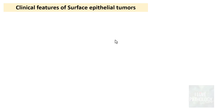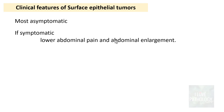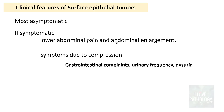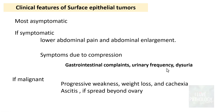Turning to the clinical features of surface epithelial tumors in general: most patients with benign tumors are asymptomatic. When symptomatic, they may present with lower abdominal pain or abdominal enlargement depending on tumor size, or with compression symptoms from large tumors such as gastrointestinal complaints, urinary frequency, and dysuria. Malignant surface epithelial tumors present with features of malignancy including progressive weakness, weight loss, cachexia, and ascites if the tumor has spread beyond the ovary.